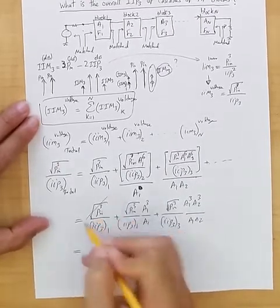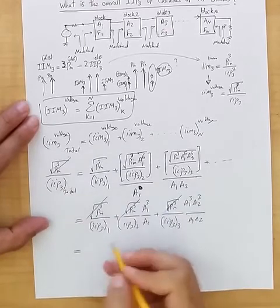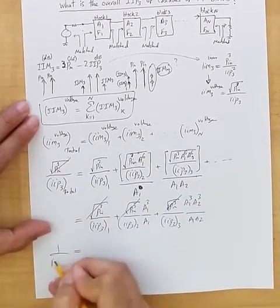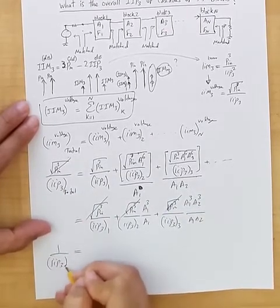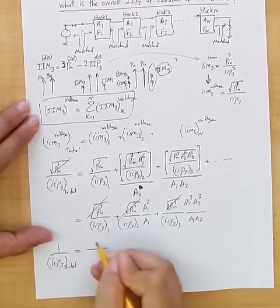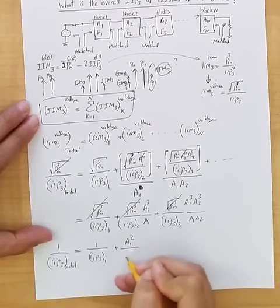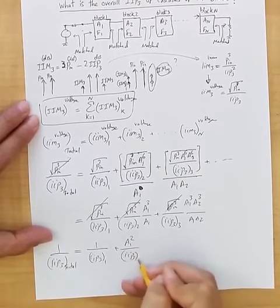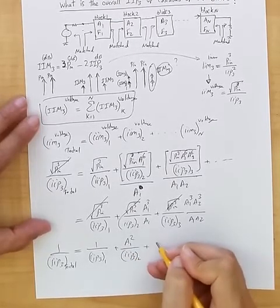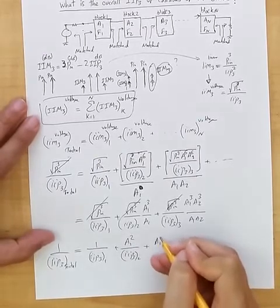So from here we can cancel out these guys from both sides of the equation. We get 1 over IIP3 total is equal to 1 over IIP3-1, plus A1 squared over IIP3-2, plus A1 squared, A2 squared divided by IIP3 of block 3, and so on.